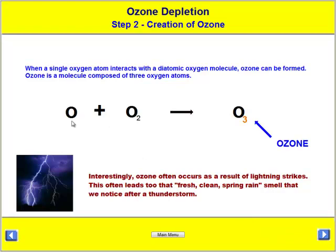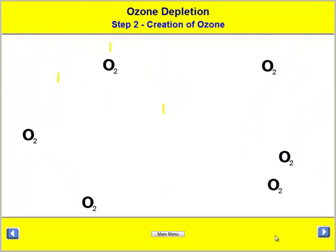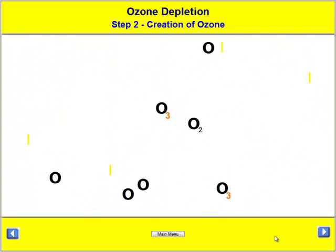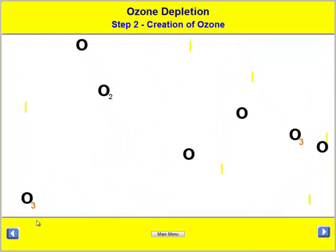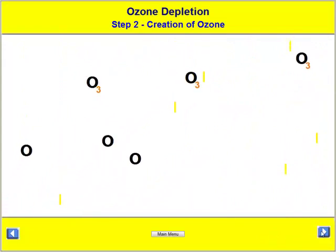Sometimes an oxygen atom will collide with an O2 atom, and this forms ozone, which is O3. We can see again in the simulation the formation of the ozone.